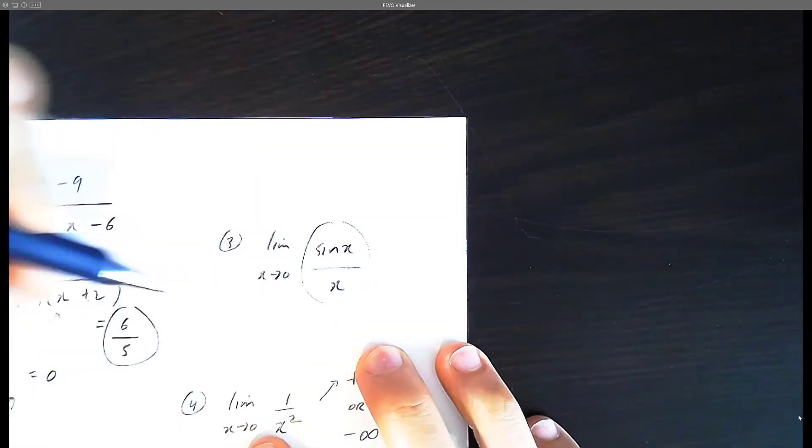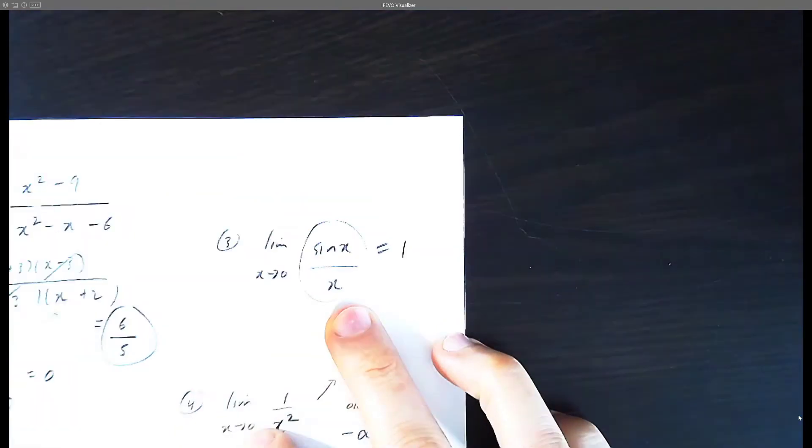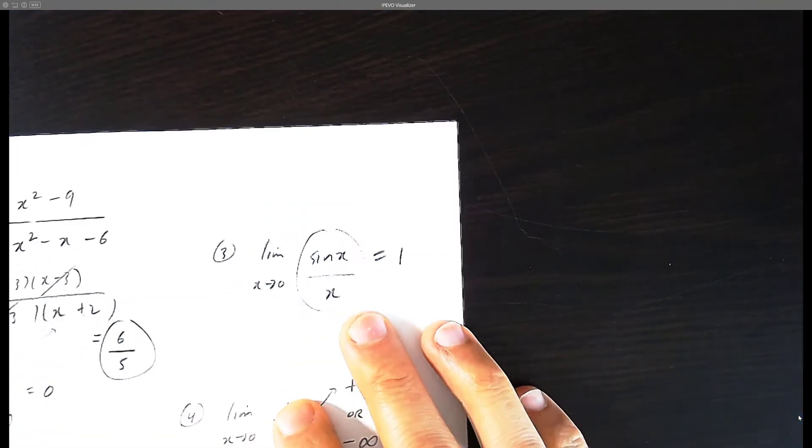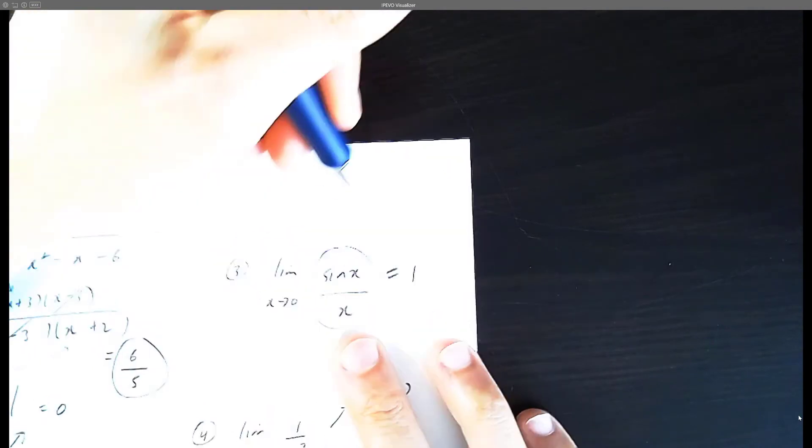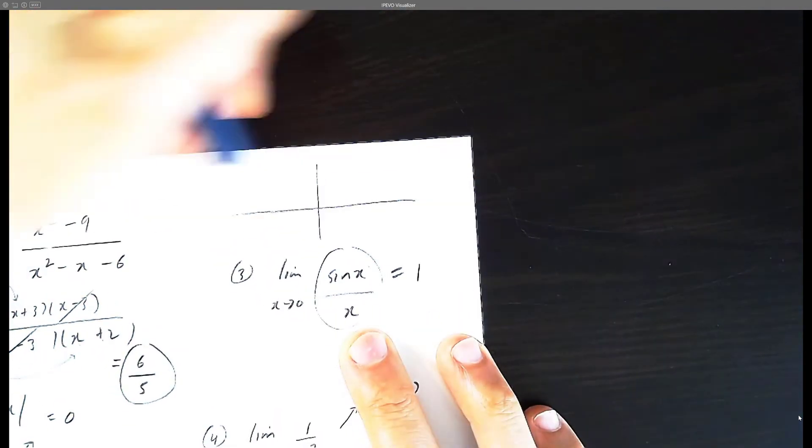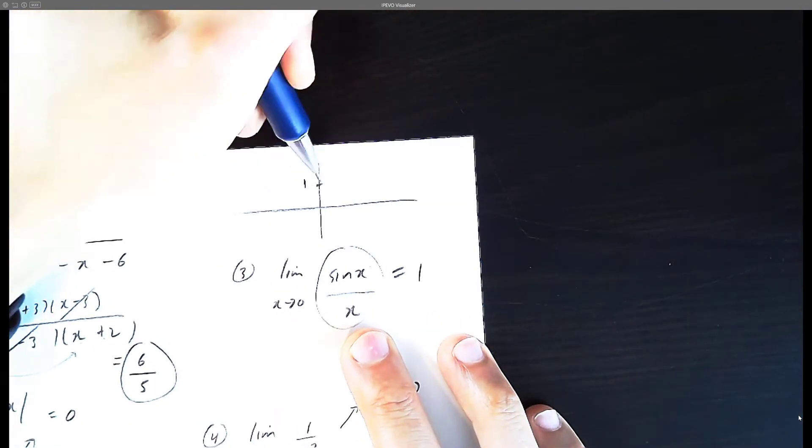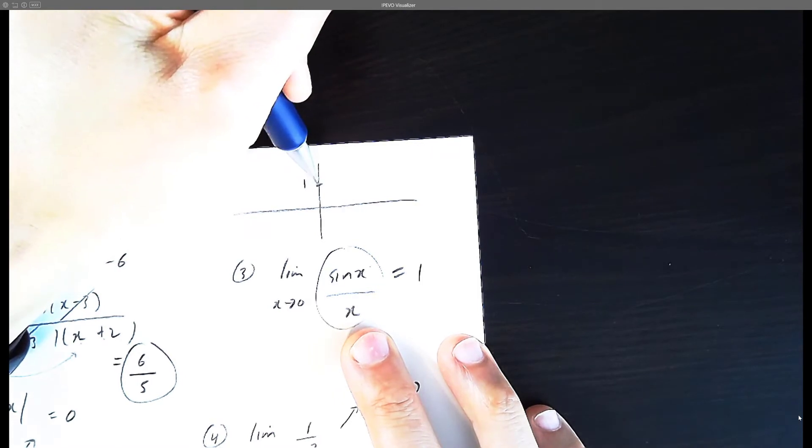Now this one here, there is a proof as to why the answer is going to be 1. But for the sake of just understanding or memorizing as a script, it's good to know that this is y equals 1. There's going to be a hole here.